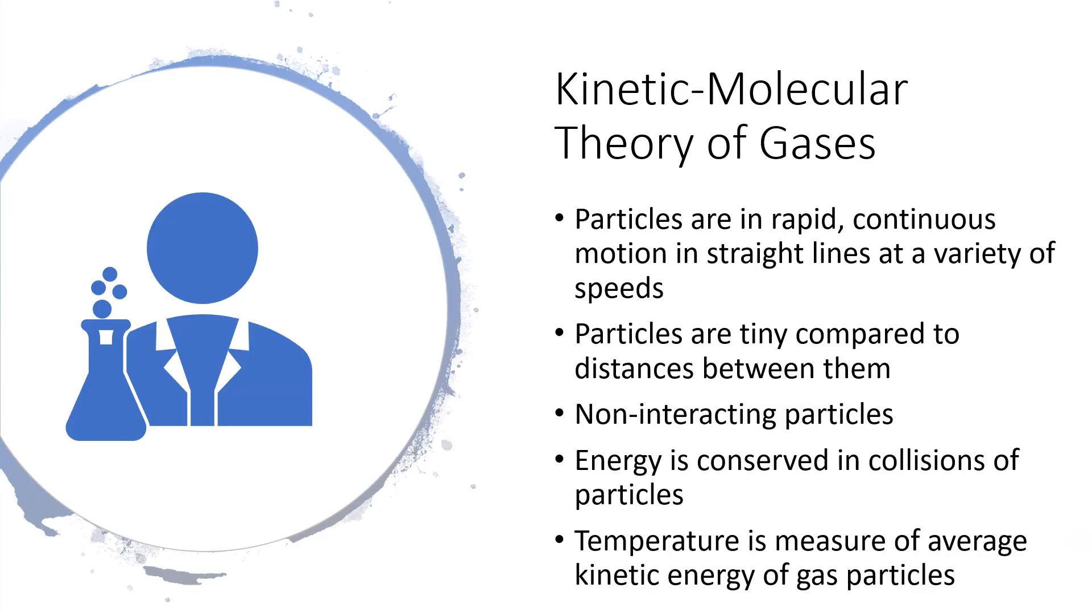The five ideas or postulates of the kinetic molecular theory talk about how gas particles move. For instance, the first postulate says that particles are in rapid, continuous motion in straight lines at a variety of speeds. That means some particles move faster than others, some move more slowly, and they're always moving in straight lines. They aren't going in spirals or some other sort of path.